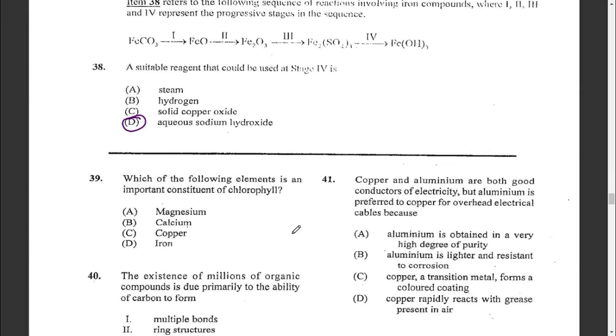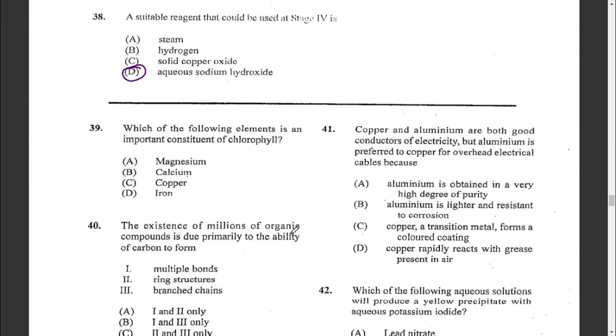Question thirty-nine: which of the following elements is an important constituent of chlorophyll? Chlorophyll consists of magnesium.